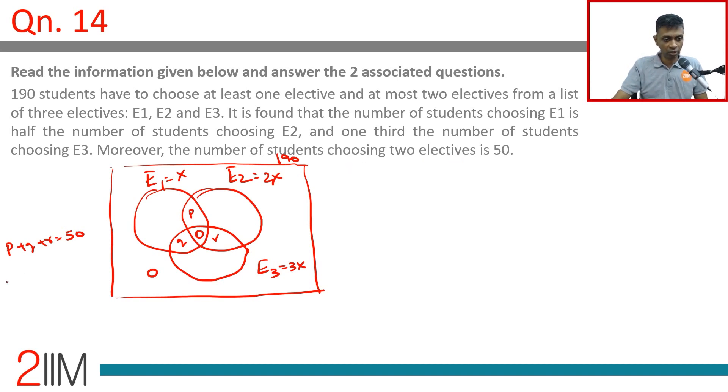So we know E1 union E2 union E3 is 190. E1 union E2 union E3 equals E1 plus E2 plus E3 minus E1 intersection E2 which is p, minus E2 intersection E3 which is q, minus E1 intersection E3 which is r, plus E1 intersection E2 intersection E3 that is nothing.